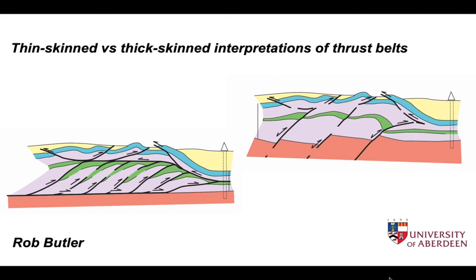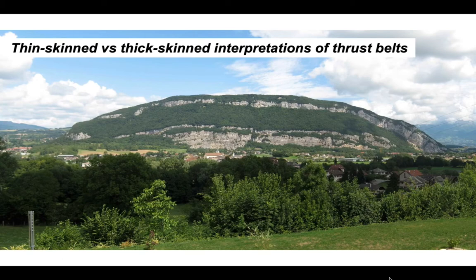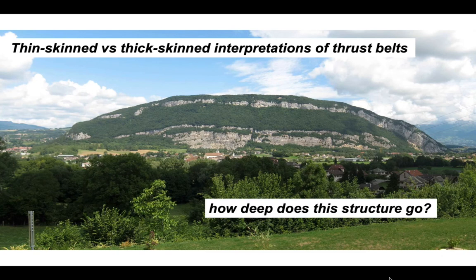The interpretation of structures on the scale of cross-sections is commonly rather under-constrained. The interpreter has to make a series of choices as to how they think structures that they observe at the Earth's surface may project into the subsurface. So if we have a fold structure like this, which is on the outer part of the French Alps, the question we need to ask is how deep does this structure go and how do the choices we make for this local structure impact on our understanding of the regional tectonics?